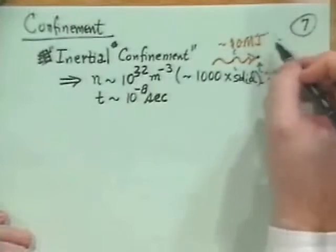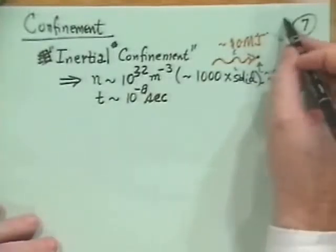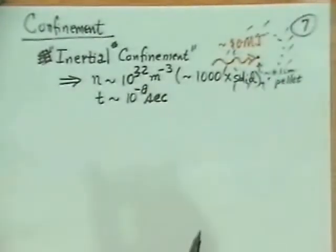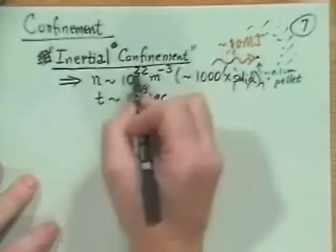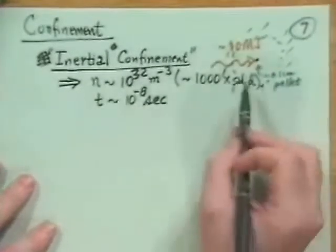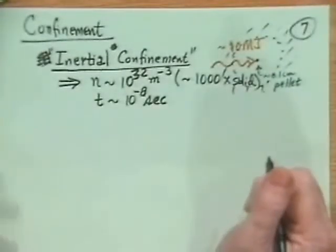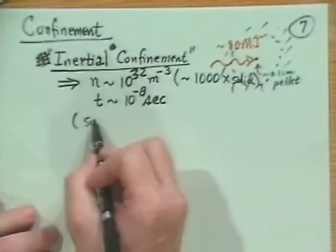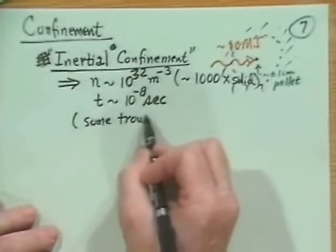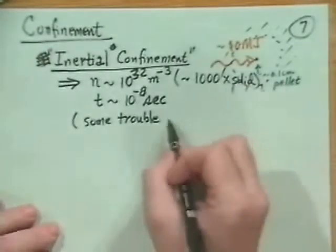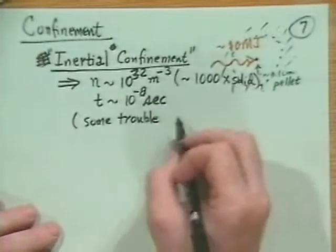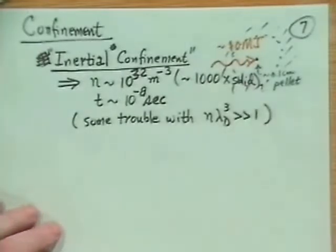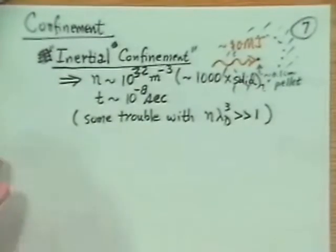You have neutrons come out for DT situation, and they would go in surrounding walls, heat up the walls, and then you run water through it to get steam. So inertial confinement is very high density, 1,000 times solid density, and then heat it to 10 kilovolts, very high ion temperatures. Some inertial confinement regimes are really not plasmas. There's sometimes trouble with satisfying N lambda debi cubed much greater than 1 because the Debye length gets too small.